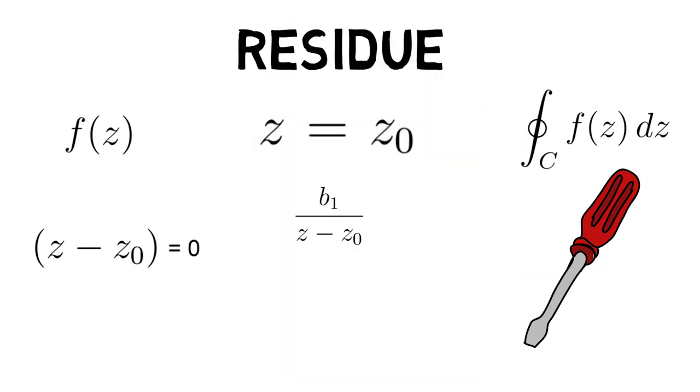With the exception of b1 upon z minus z0, this has the value 2 times pi times b1. Since it is the only coefficient remaining after integration,